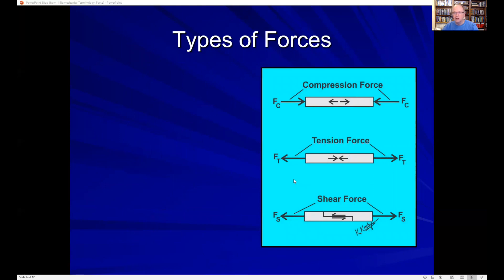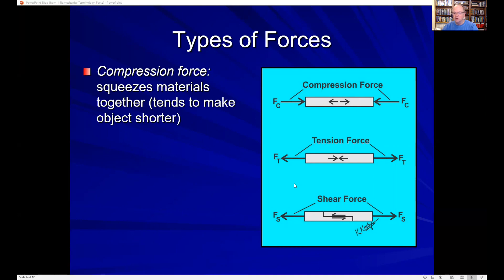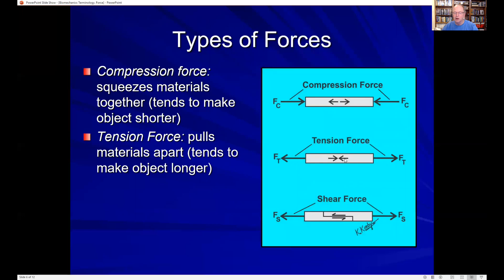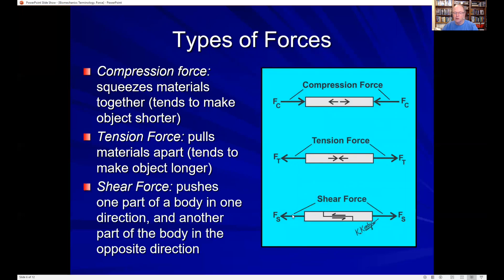Well, there's three types of main forces. There's a compression force, which tends to squeeze materials together or tends to make the object shorter. Here we have a force acting on both sides of a bar that's tending to make it shorter. We have the tension force here that tends to pull materials apart. This tension force is tending to make this bar longer. And a shearing force where we have a pulling force on both sides that is going to push or pull one part of the body in one direction and another part in the opposite direction, tending to slide these two objects apart.